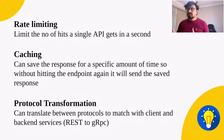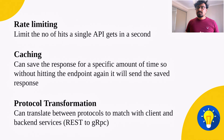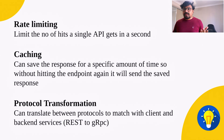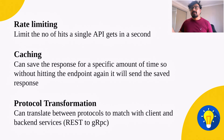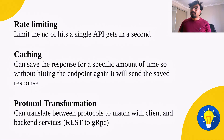Next is caching. You can save responses for a specific amount of time without hitting the endpoint again and again. For example, if a response is cached for two minutes and multiple requests come in during that window, we don't have to hit the API endpoint each time — we can simply return the cached response from the API gateway.